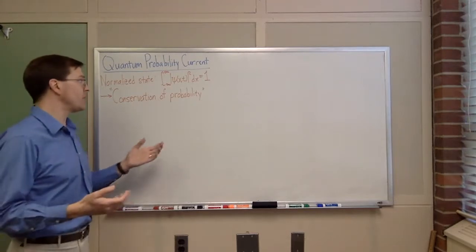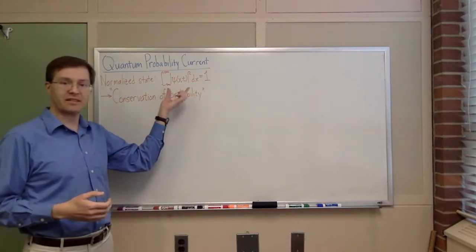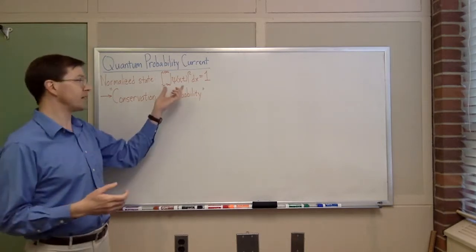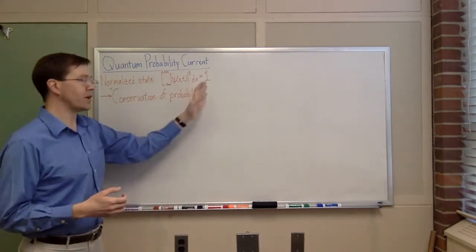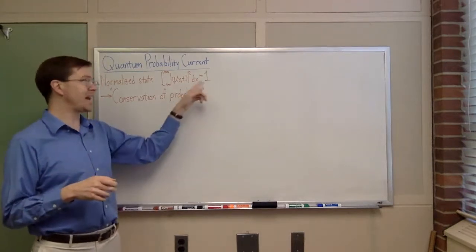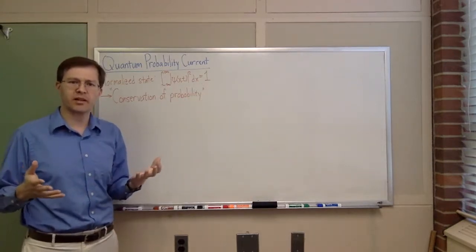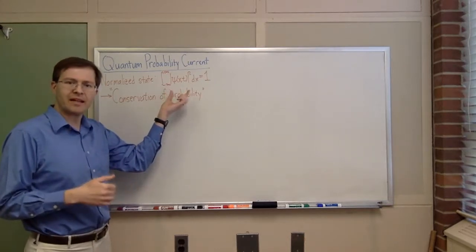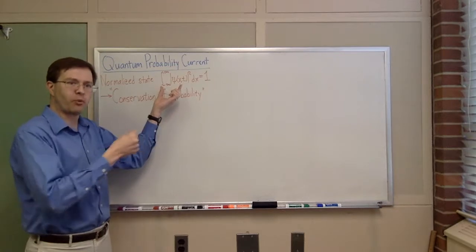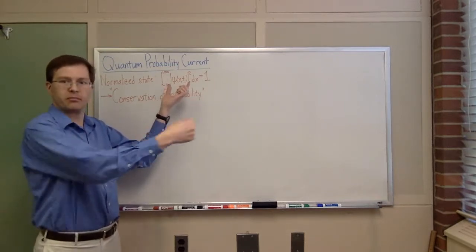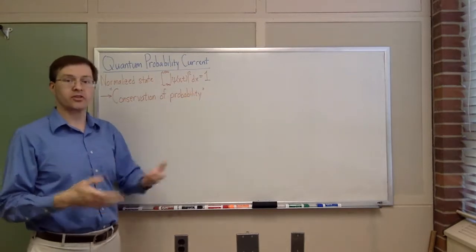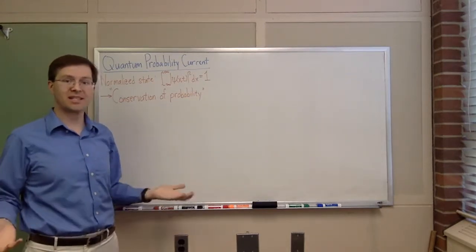As you probably know, if you have some quantum wave function psi of x and t, it has to be normalized, in the sense that when you take the absolute square of psi and integrate that over all space — minus infinity to infinity in one dimension — it has to add up to 1. Psi squared, the absolute square of psi, is the probability density that your particle is at any given point x, and when you add it all up, the total probability has to be 1.